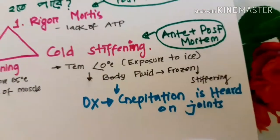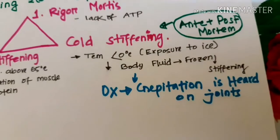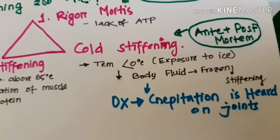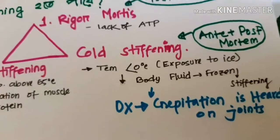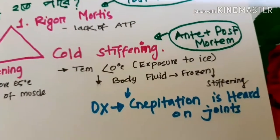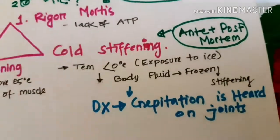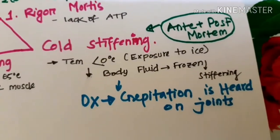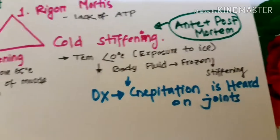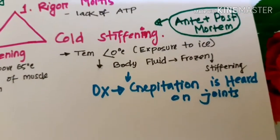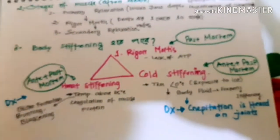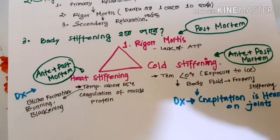Cold stiffening occurs at temperatures below 0 degrees Celsius — exposure to temperatures below freezing. Most of the fluid portion of muscles becomes frozen. As more of the body freezes, stiffening and hardening occur. In cold stiffening, the joints are still movable unlike in rigor mortis. Importantly, cold stiffening can be both ante-mortem and post-mortem — it can occur before or after death.